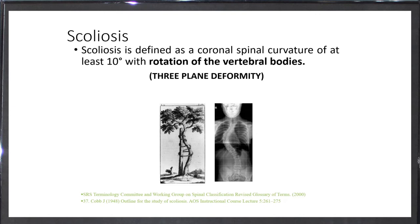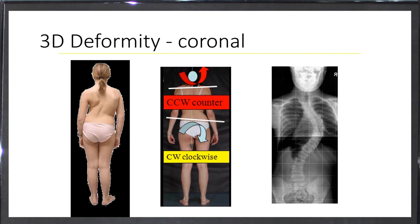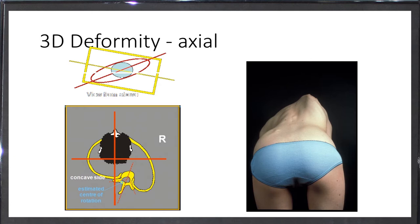Scoliosis in general is defined as a coronal spinal curvature of at least 10 degrees with rotation of the vertebral bodies. This is the common definition for scoliosis, but we have to note all the time that it's a three-dimensional deformity. It's not a lateral curvature; it's a lateral curvature with some rotation. This is the bending test showing the amount of rotation that can cause this clinical picture.